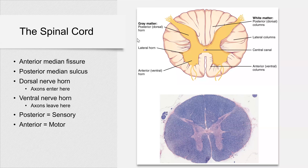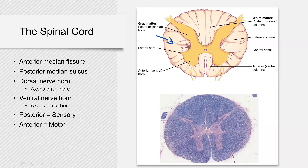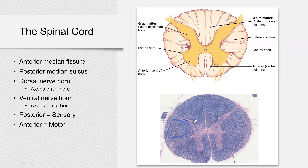Let's look at a cross-section of the spinal cord. You can see it's divided into right and left parts by the anterior median fissure and the posterior median sulcus. The difference between a sulcus and a fissure is that a fissure is just a deeper sulcus. One area is shown in a lighter color and the other in a darker color — this is white matter and this is gray matter. Just remember: white matter is outside and gray matter is inside.